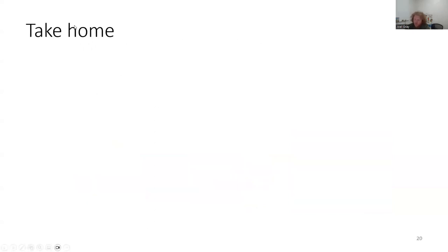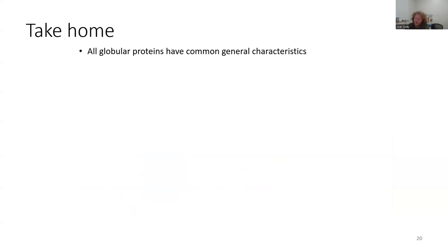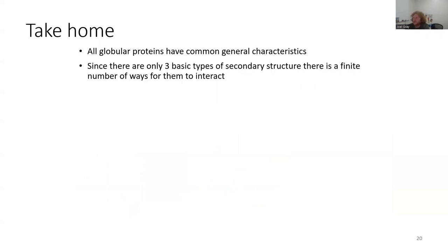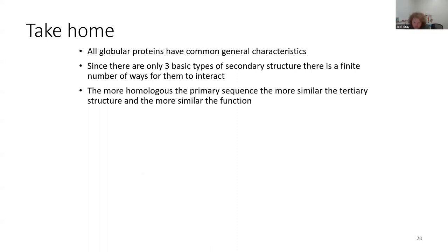Your take-home with respect to protein domains, families, and motifs, and globular proteins as a whole: globular proteins have general characteristics that are very common amongst them. There are only three basic types of secondary structures, and as a result there's a finite number of permutations and organizations those can take on and interact with one another. The more homologous the primary sequences, the more similar the tertiary structure of that protein is going to be.